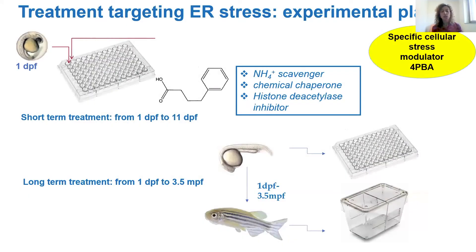In order to do that, we performed a preliminary study that has already been published, using chemical chaperones — molecules that help the protein to fold and to be secreted. So we tried to get the collagen out of the cell, and we did that in both models: the Chihuahua and the P3H1.